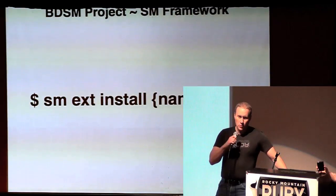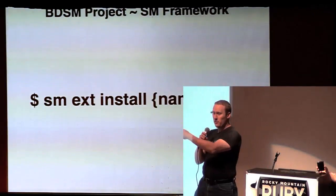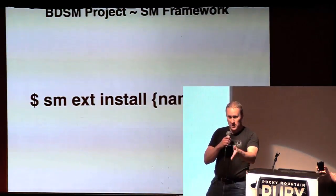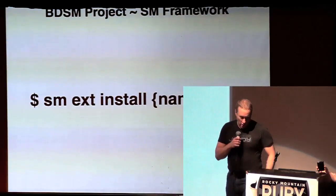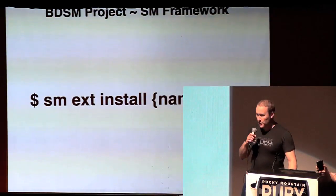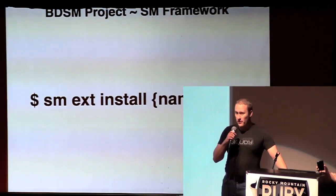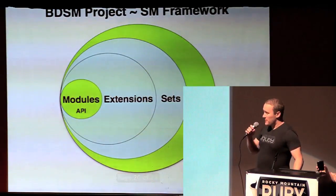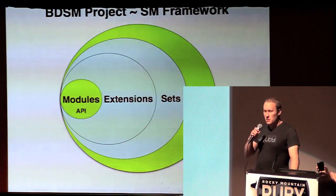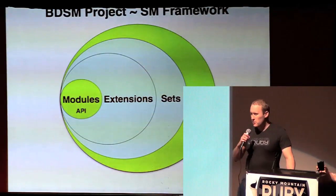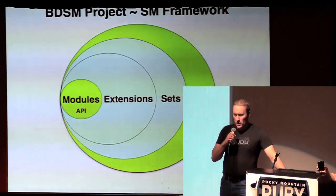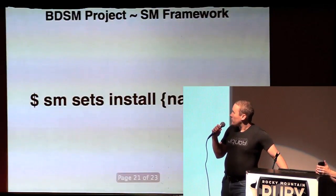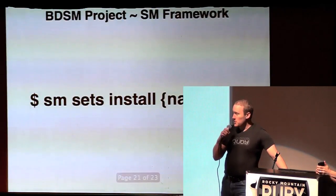You give it a name — this is what your 'sm' command maps to. So if you're installing an NGINX one, it would be 'sm nginx', whatever. Give it a URI — that can be a file system path or any valid URI. You can also have sets of extensions. If you have a bunch of extensions related to your company, you make a set with a bunch of them and install them similarly.